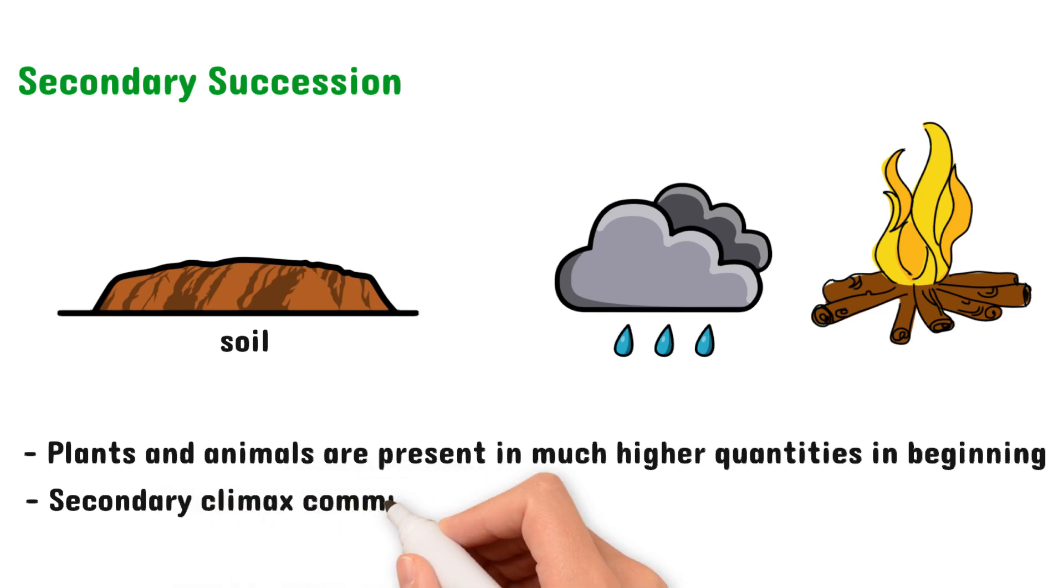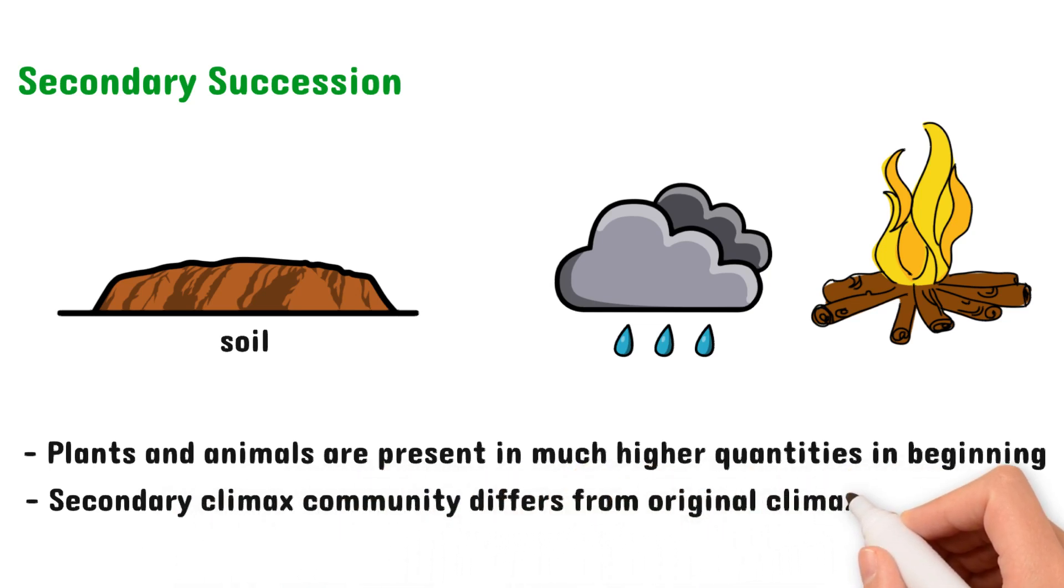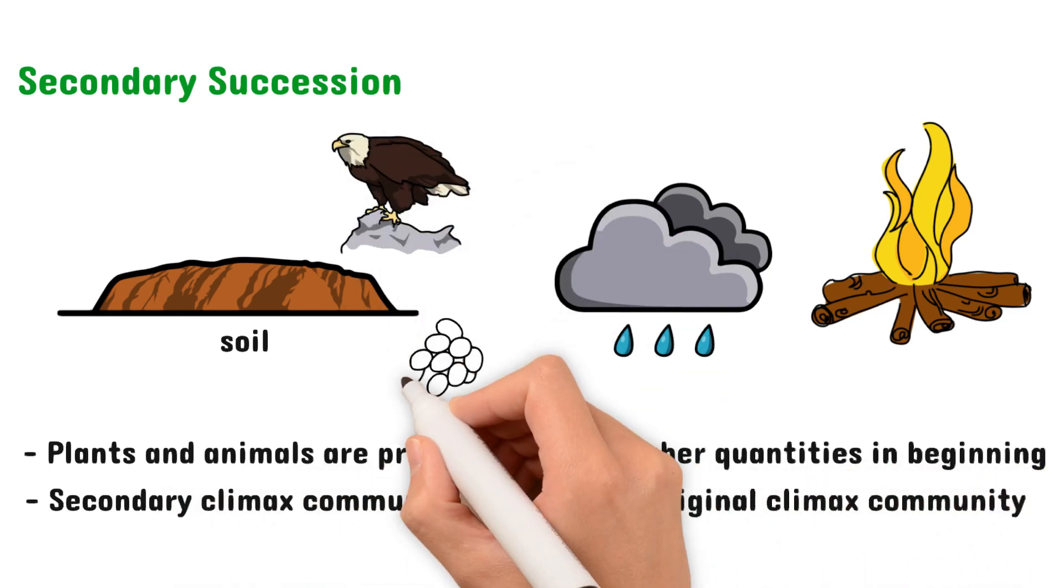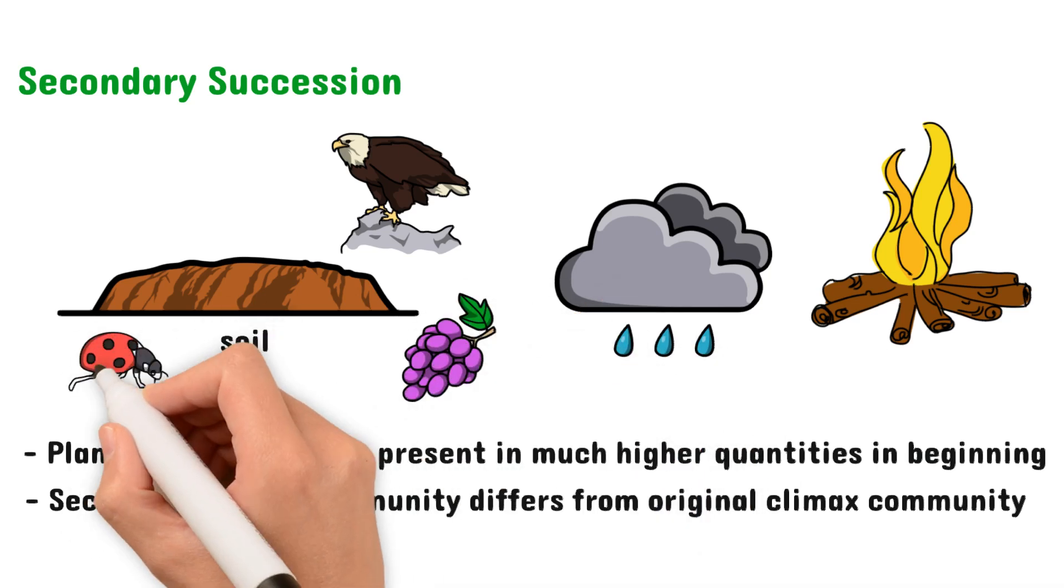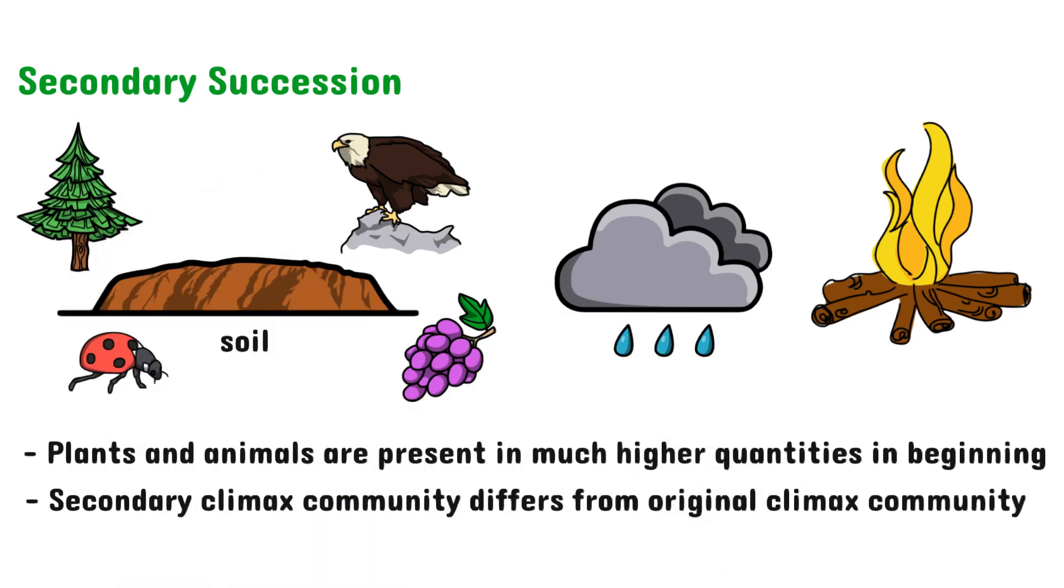What's interesting is that the secondary climax community might be different from the original climax community. This is because it will depend on the climate and on which organisms colonize the area.